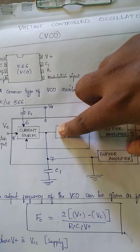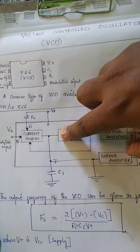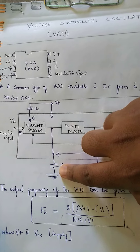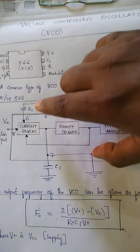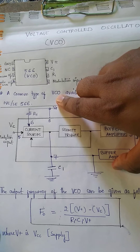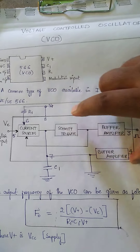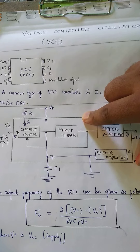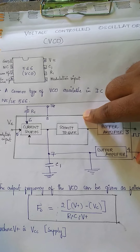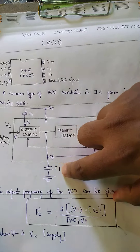Looking at the block diagram, there are three internal blocks: one is the current source, another is the Schmitt trigger, and the next is the buffer amplifier. Pin number 6 is for resistor R1 and pin number 7 is for capacitor C1. These two are connected externally.